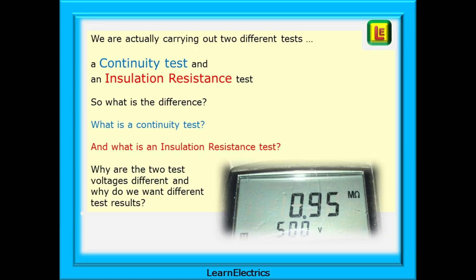The simple answer is that we are actually carrying out two different tests. We first do a continuity test and then an insulation resistance test. So what is the difference? What is a continuity test and what is an insulation resistance test? Why are the two set voltages different and why do we want different test results?